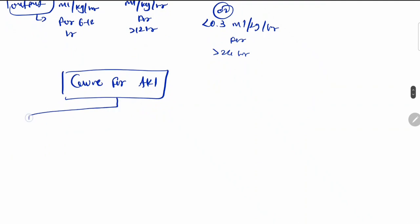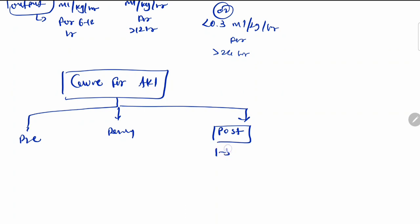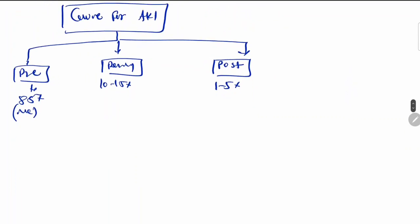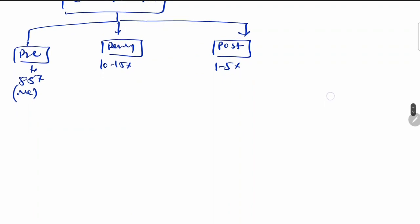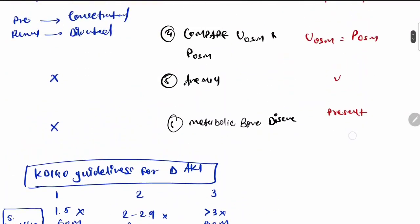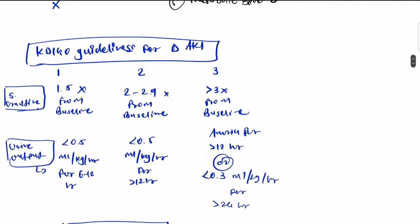If we look at the causes of acute kidney injury, there are three main categories: pre-renal, renal, and post-renal. Post-renal accounts for 1 to 5 percent, renal for 10 to 15 percent, and pre-renal is most common, seen in 85% of cases. Details of all three causes are covered in another video.